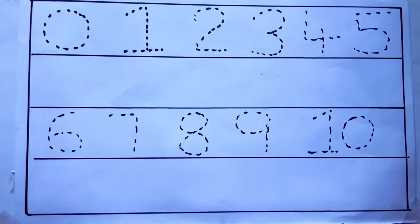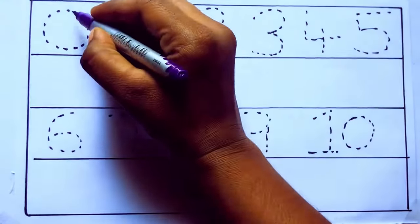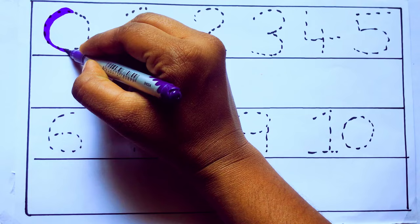Let's draw numbers. Violet color, 0, Z-E-R-O.